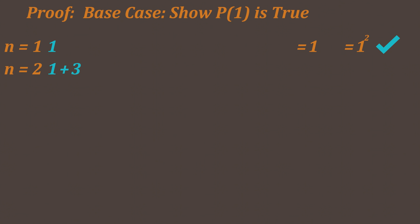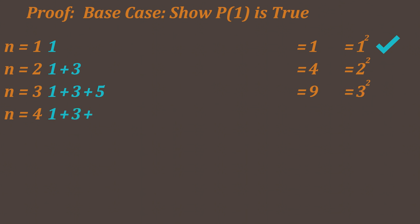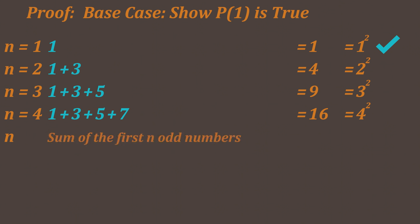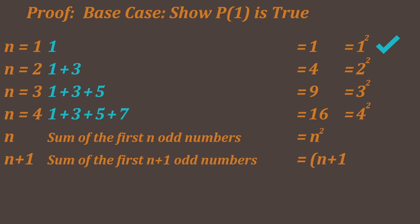Now we are going to look at the second step, which is: if my statement is true for some value k in the natural numbers, and that implies that it is also true for the next value k plus 1, then it is true for all k in the naturals. Let's apply the second step in this problem. Suppose that my statement is true for n. That means that the sum of the first n odd numbers is equal to n squared. Now, we are going to show that this implies that the sum of the first n plus 1 odd numbers is equal to n plus 1 squared.